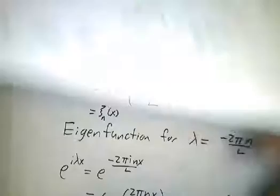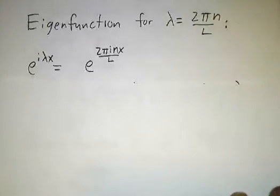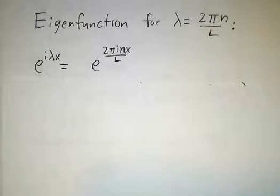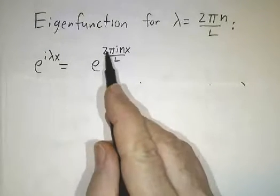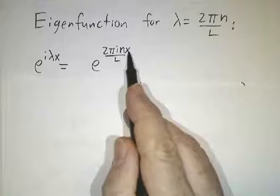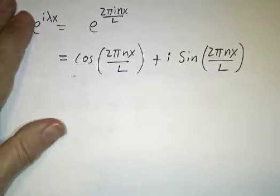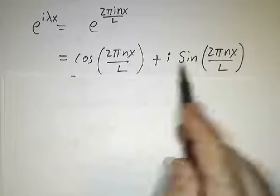Well, that's the eigenvalues, and we have our eigenfunctions. Our eigenfunctions are e to the i lambda x, so that's e to the 2π i over L nx. And of course, that's a cos plus i times the sin.